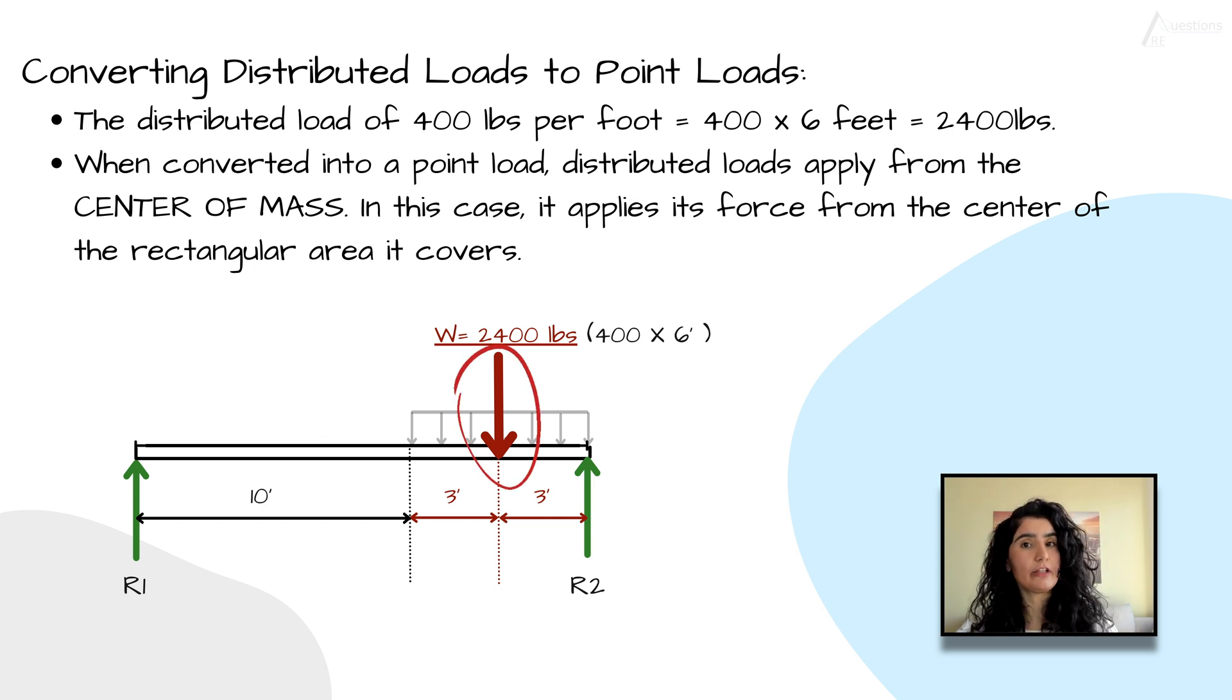The question says we have 400 pounds per foot, right? What is the length of this distributed load? It's six feet. So for each foot we have 400 pounds, for six of them we will end up having 2,400 pounds. Pay attention to the question. If the question gives you x amount of pounds per foot, you need to multiply that x by the length of that distributed load to find the total loads. Here we found the total loads to be 2,400 pounds.